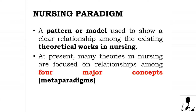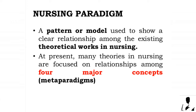At present, many theories in nursing are focused on relationships among four major concepts. The term 'meta-paradigm' came from two Greek words: 'meta,' which means 'with,' and 'paradigma,' which means 'pattern.' A meta-paradigm specifies the main or central concepts of nursing.